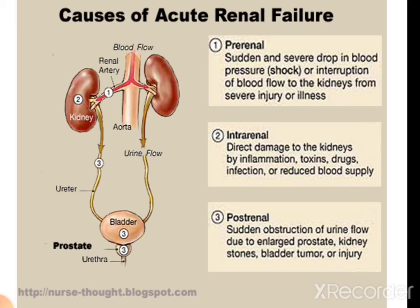Acute renal failure involves a sudden or severe drop in blood pressure resulting in reduced blood flow to the kidneys, causing kidney function to fail. It can be pre-renal — where blood is blocked in the renal arteries and not reaching the kidney; intra-renal — where there is direct damage to the kidneys by inflammation, toxins, or infection; or post-renal — where there is obstruction distal to the kidney, such as obstruction in the ureter, enlarged prostate, renal stones, or bladder tumor or injury.